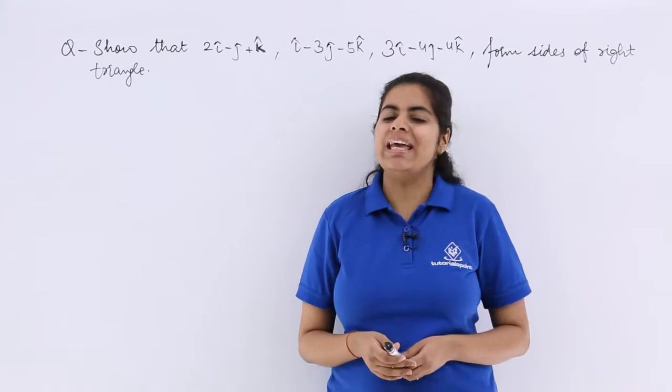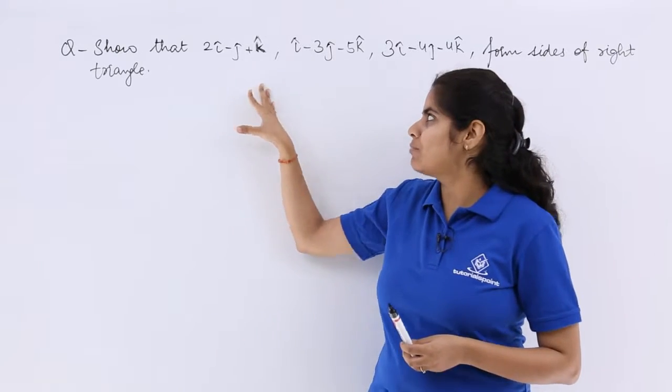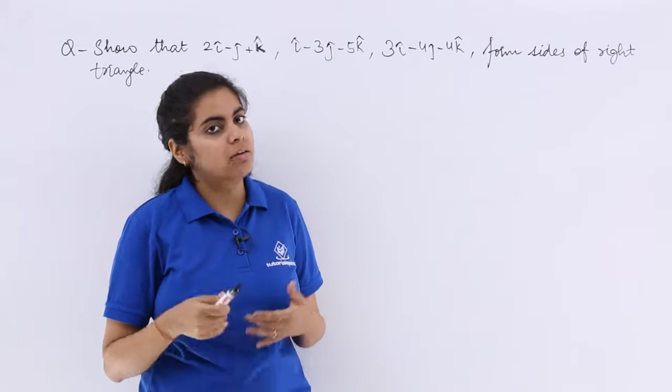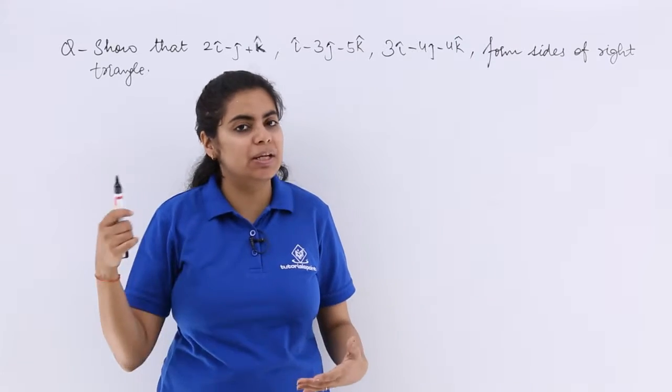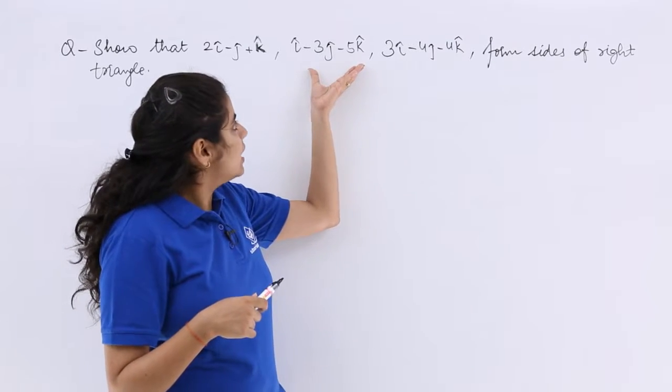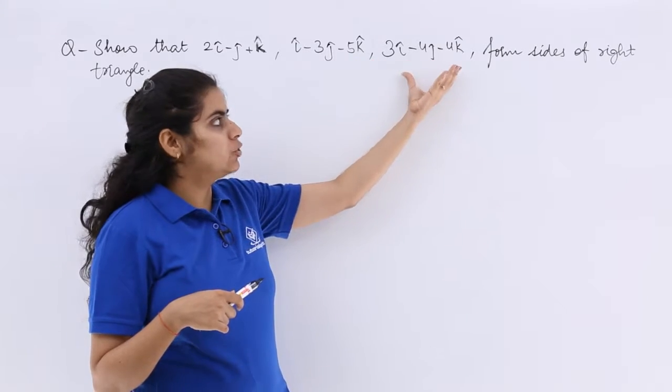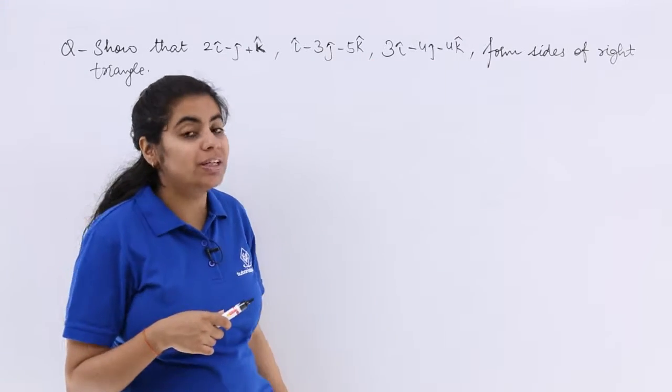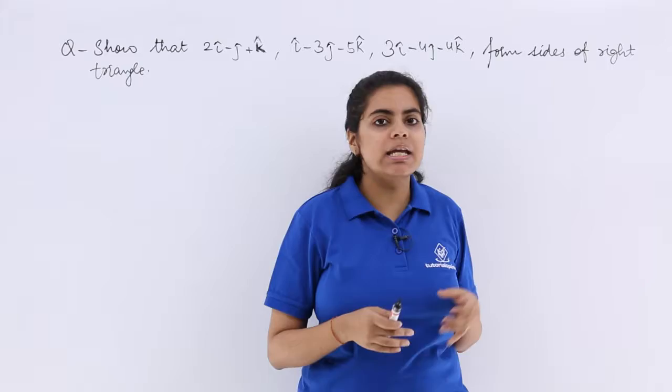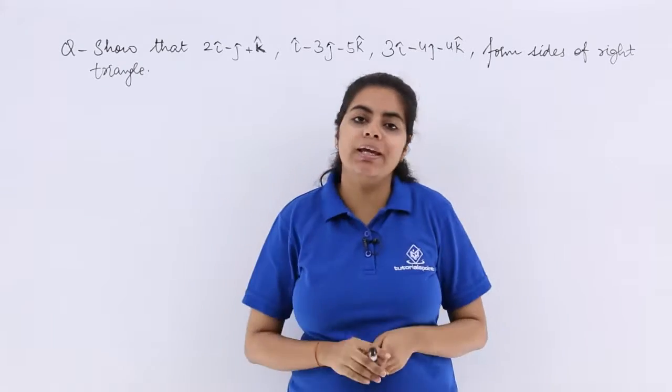Now what does this question say? It says show that 2i-j+k, i-3j-5k, 3i-4j-4k form the sides of a right triangle.